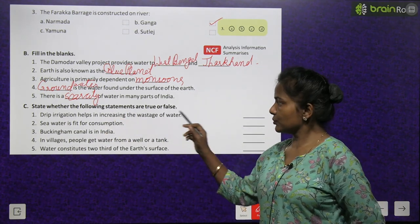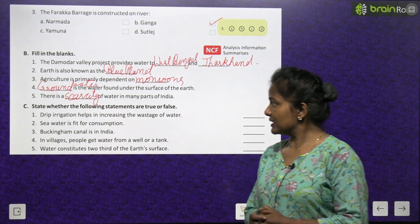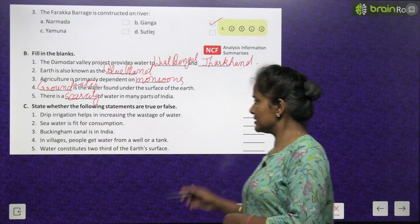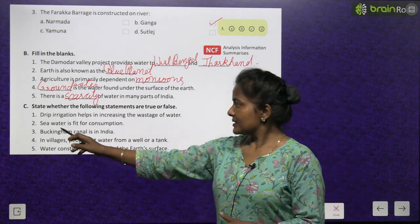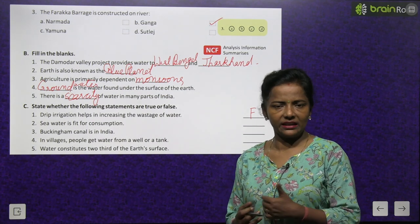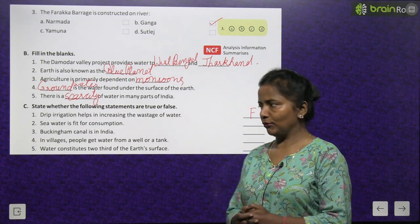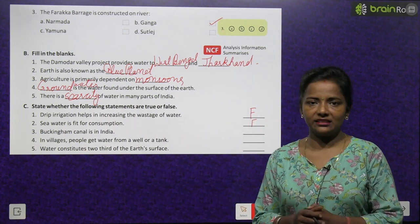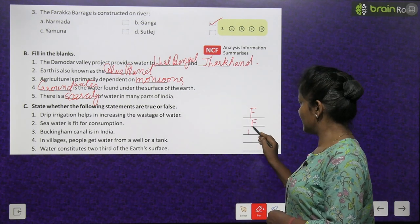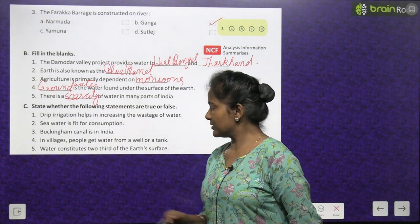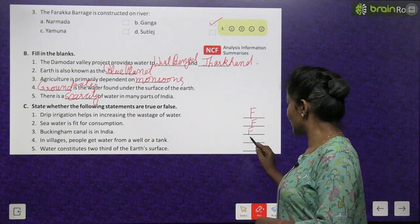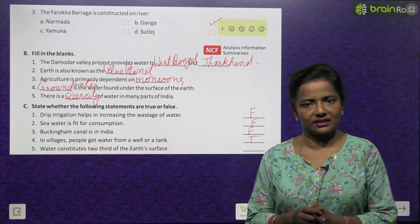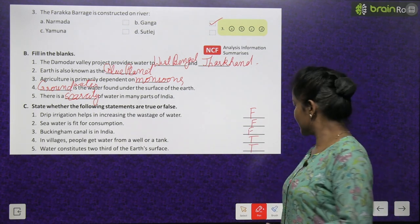State whether the following are true or false. Drip irrigation helps in increasing the wastage of water — False. Seawater is fit for consumption — False, because it is salty. Buckingham Canal is in India — False. In villages, people get water from a well or a tank — True. Water constitutes two-thirds of the earth's surface — True.